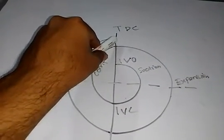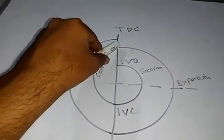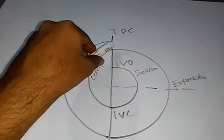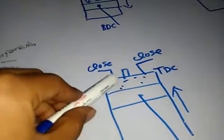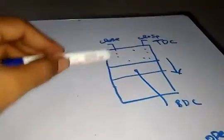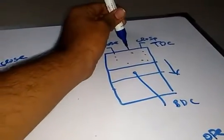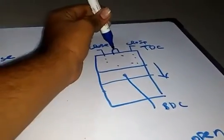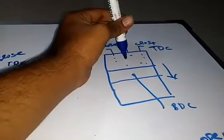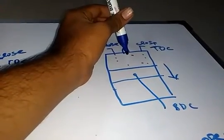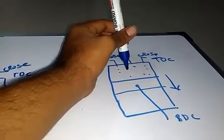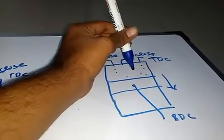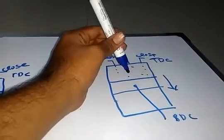From here, that is from the TDC, the expansion process begins. The expansion process is nothing but the power stroke. After the piston reaches the top dead center — that is this point, the top dead center — the power stroke begins. Here the spark plug ignites the air-fuel mixture inside the cylinder, so that an increase in temperature and pressure is introduced inside the cylinder, which in turn moves the piston in a downward direction.